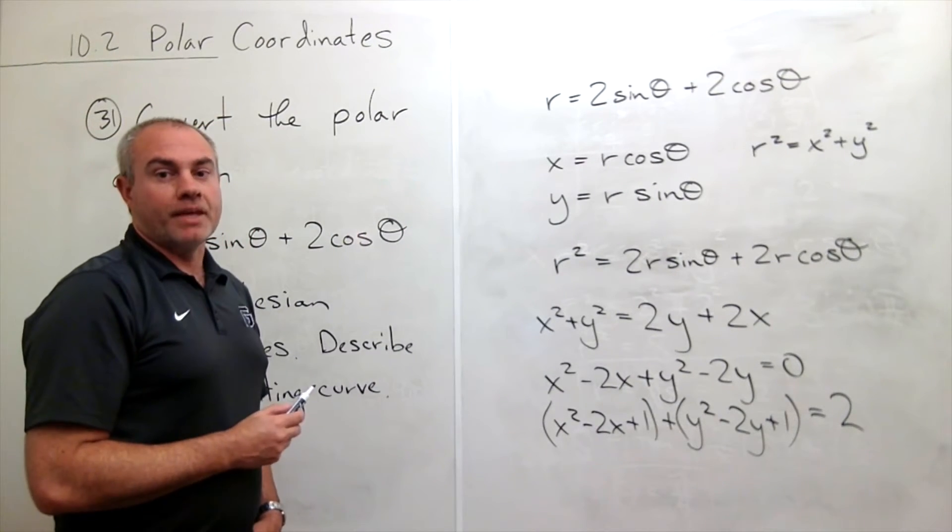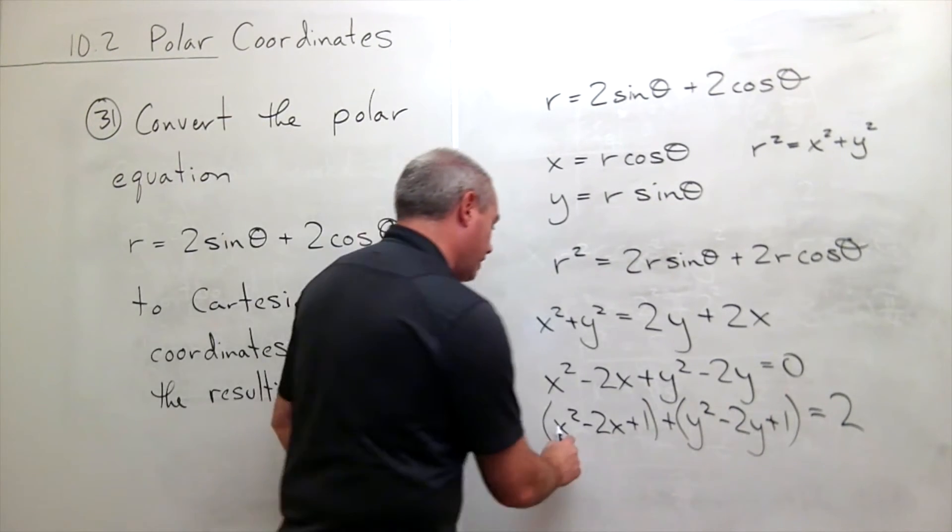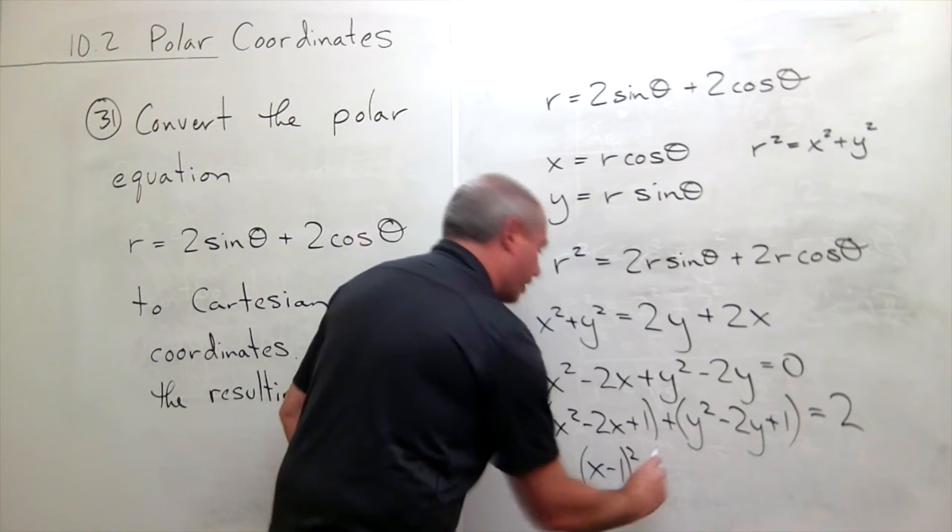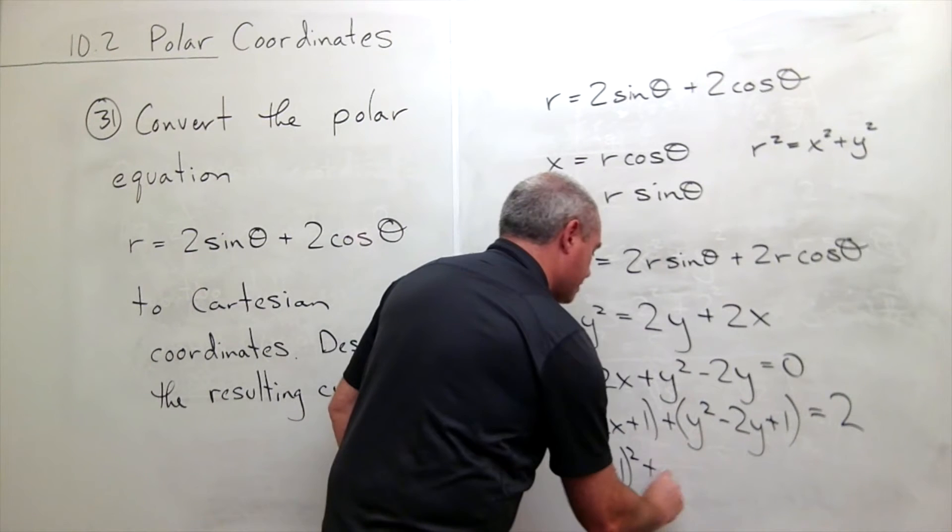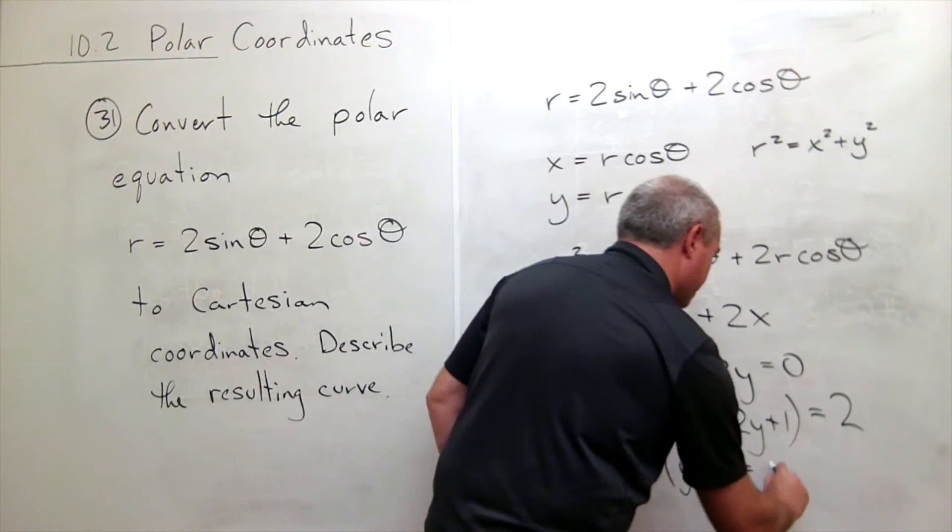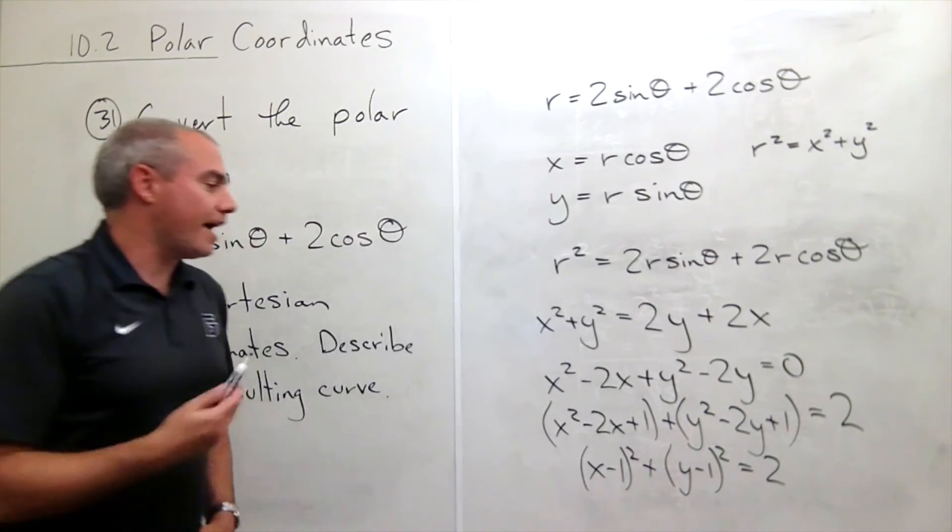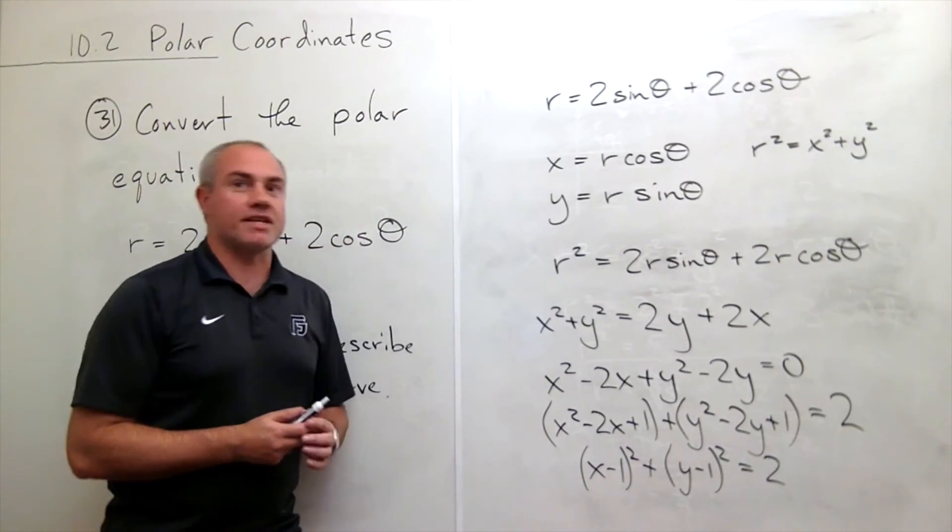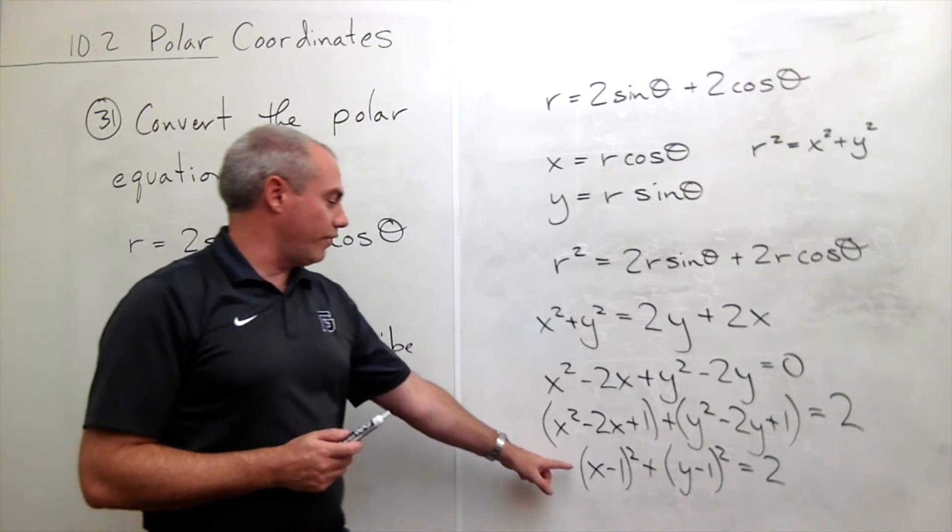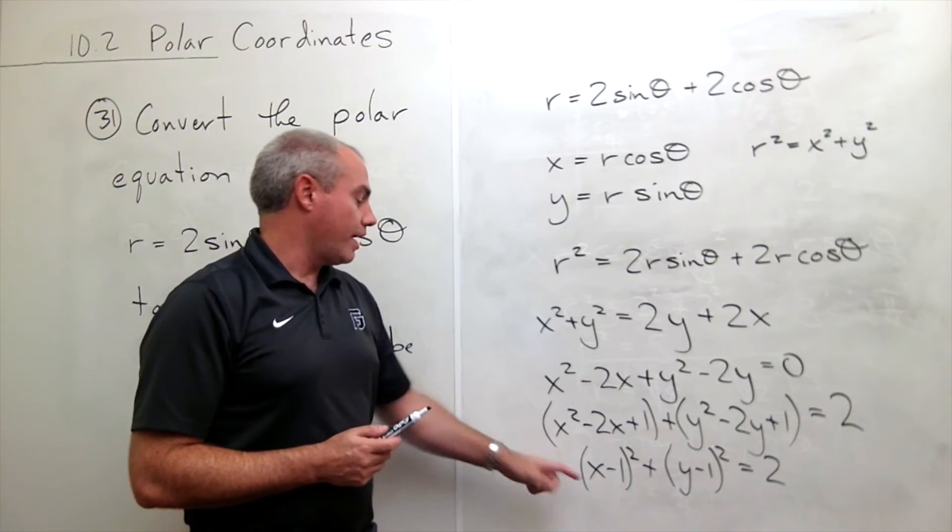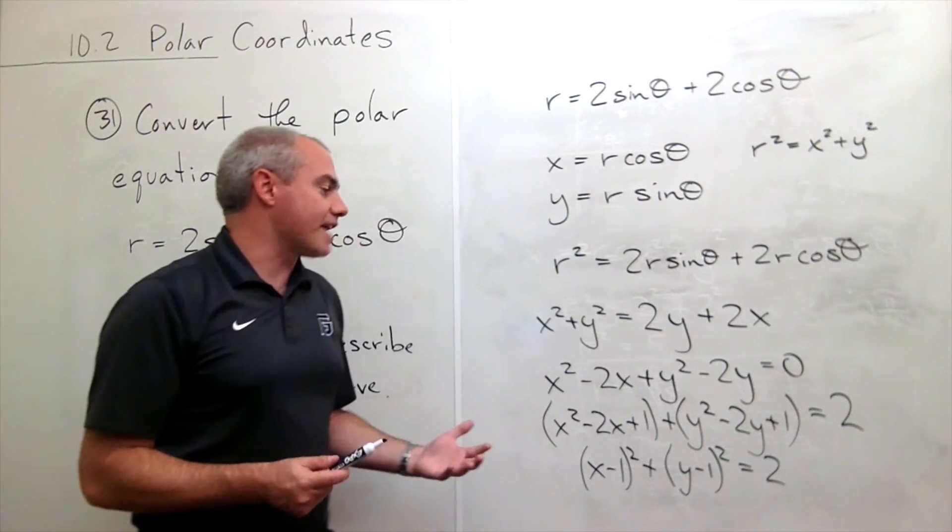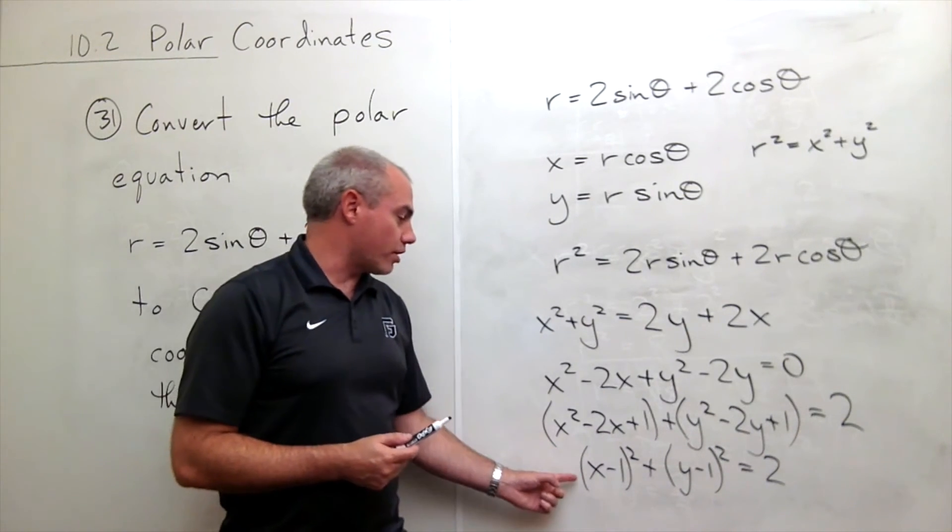All right, now I can rewrite this thing. This is x minus 1 quantity squared plus y minus 1 quantity squared is equal to 2. And that we recognize as the standard form of a circle. So not only now have we written this curve as a Cartesian curve, we also know exactly what it is. This is a circle.